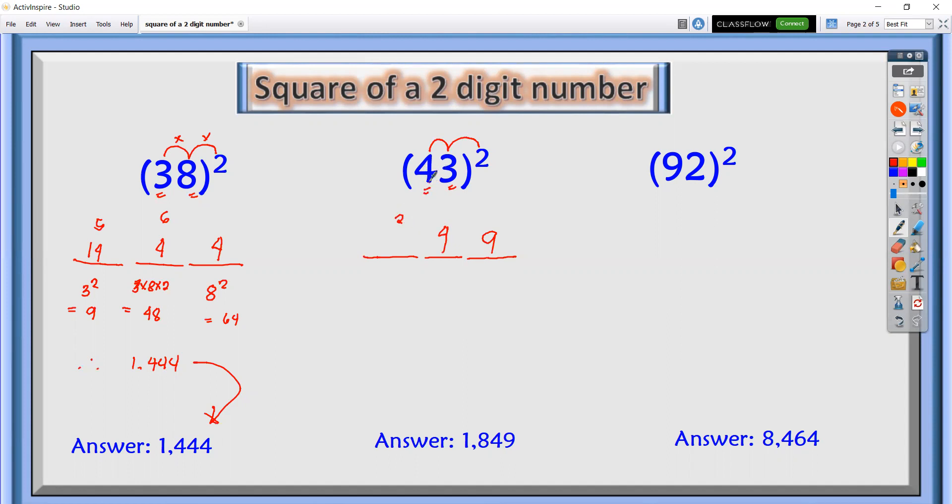And square the first number, 4 squared is 16 because 4 times 4. 4 squared is 16 plus 2, we have 18. So the answer there is 1,849.